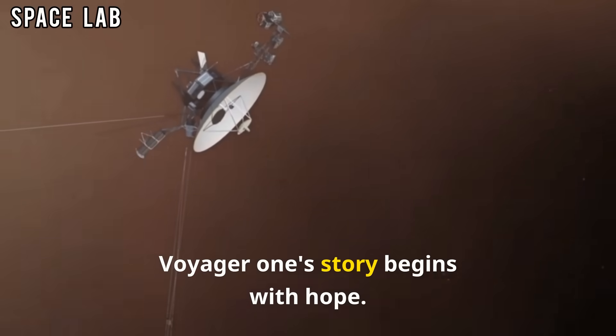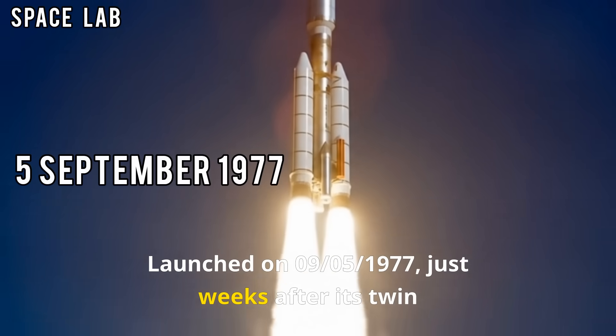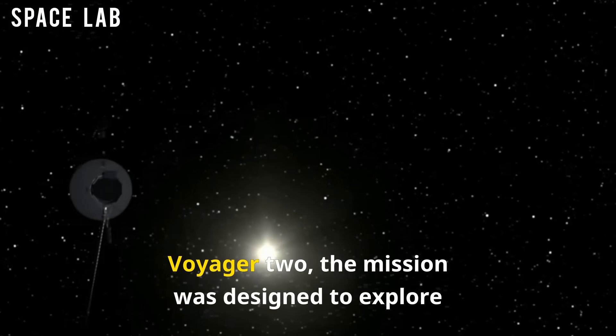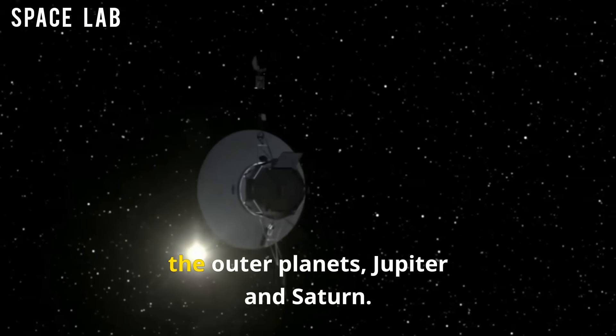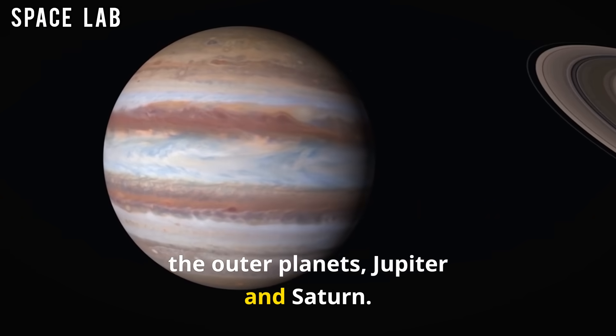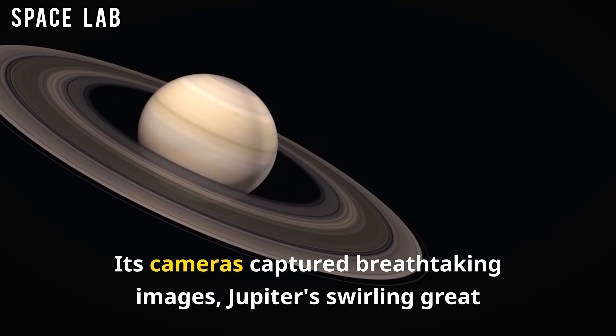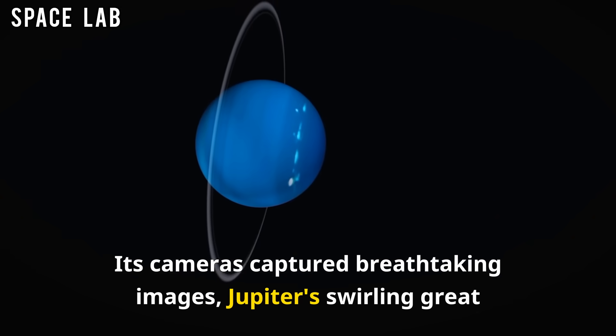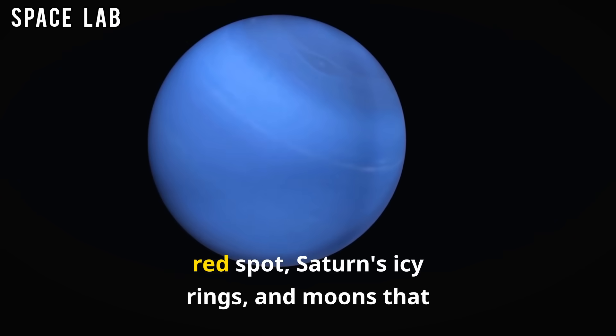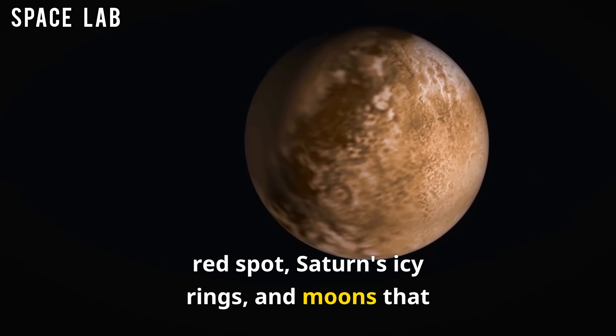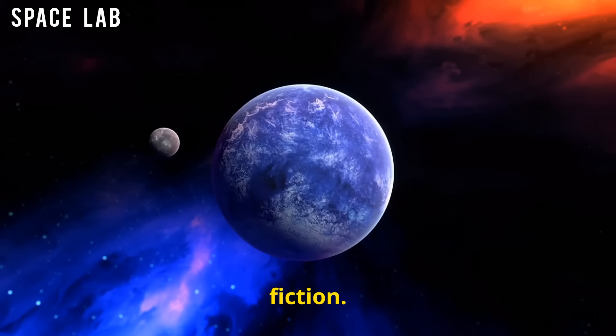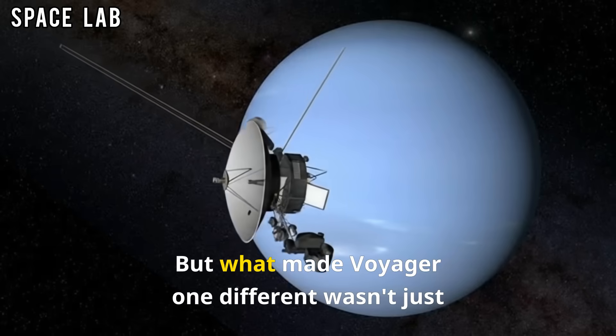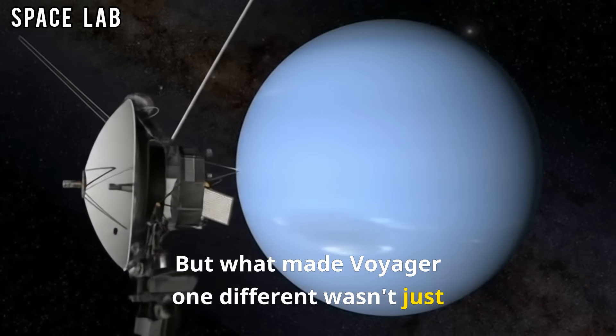Voyager 1's story begins with hope. Launched on September 5, 1977, just weeks after its twin, Voyager 2, the mission was designed to explore the outer planets, Jupiter and Saturn. Its cameras captured breathtaking images: Jupiter's swirling great red spot, Saturn's icy rings, and moons that looked like alien worlds straight out of science fiction. But what made Voyager 1 different wasn't just its planetary tour.